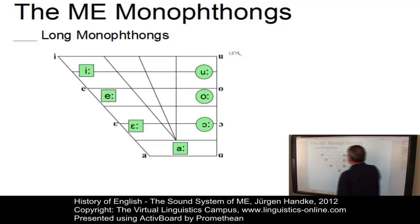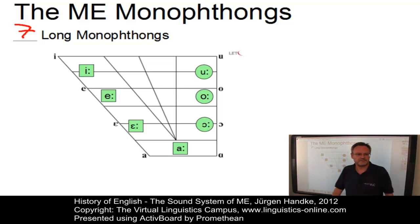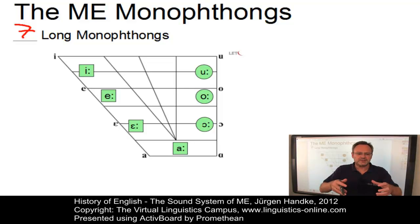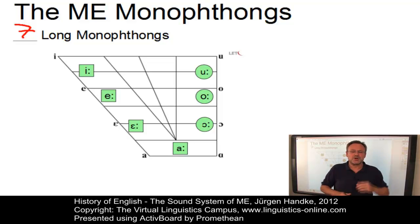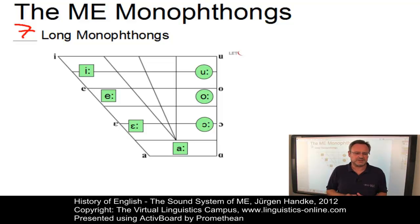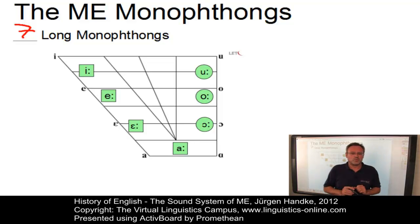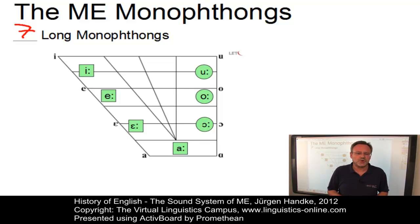Here are the seven long monophthongs. Apart from some qualitative changes, vowel quantity — that is, the position: front, back, high, low — was retained as a distinctive feature in most cases. Furthermore, the Old English diphthongs became monophthongs in Middle English. The most significant change was that Middle English no longer had rounded front vowels such as /y/ or /yː/.